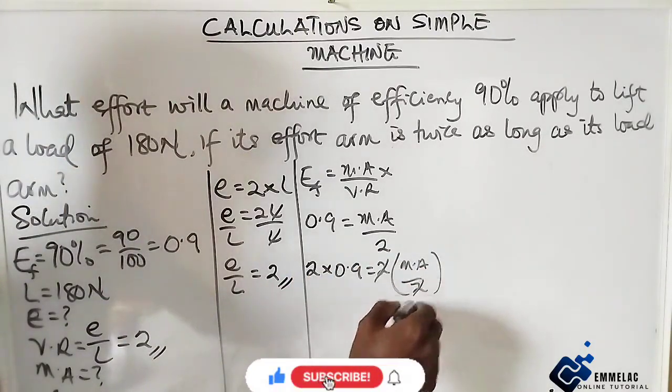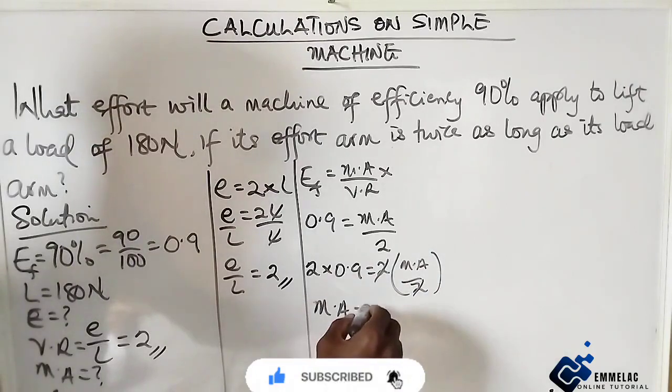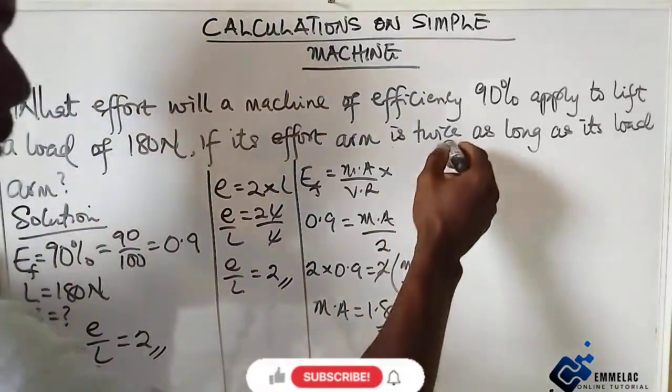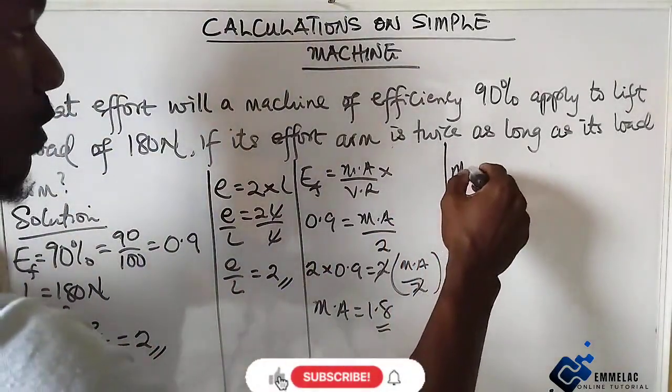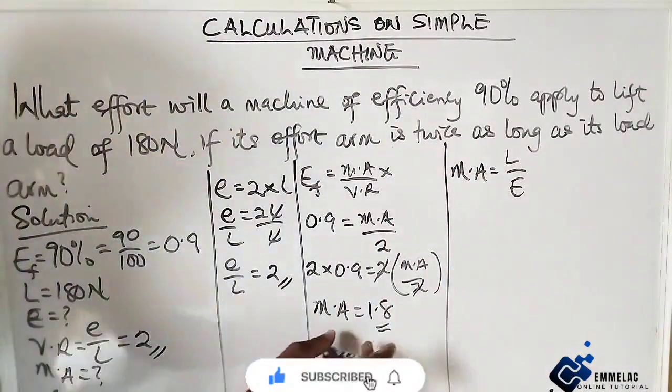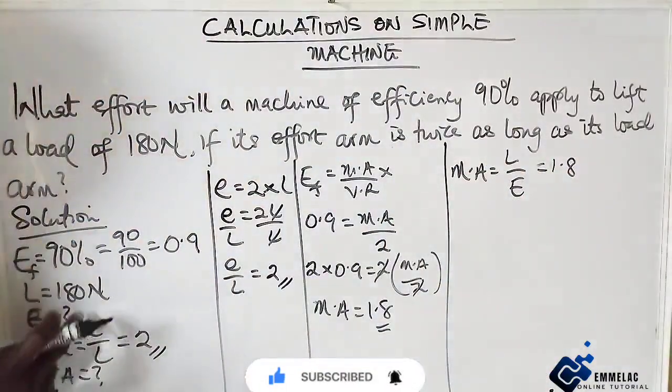So this will cancel out, so mechanical advantage here will be 1.8. All right. Now let us recall also that mechanical advantage equals load over effort, and mechanical advantage is giving us 1.8, but our load is giving us 180.